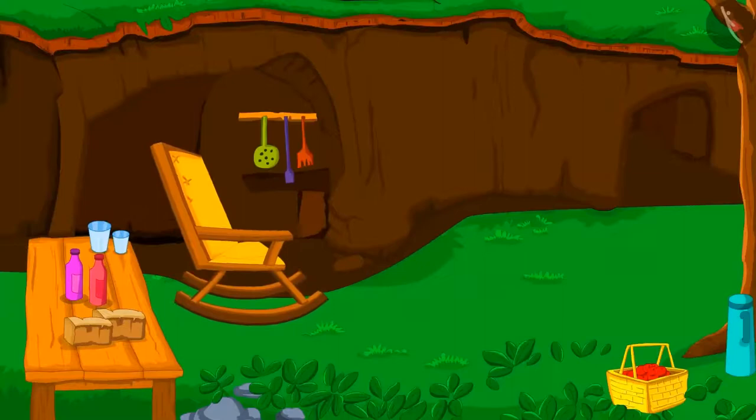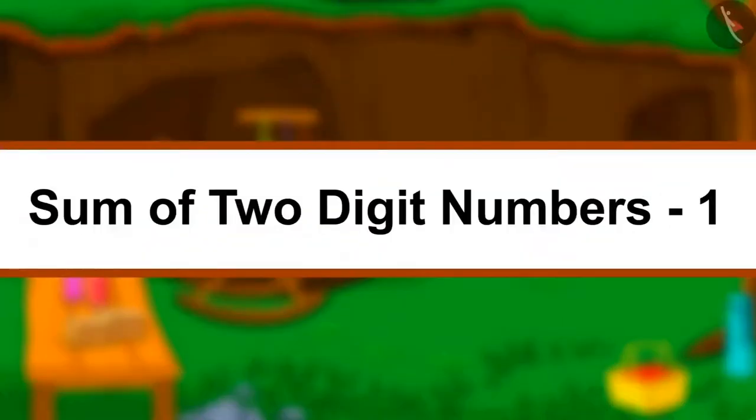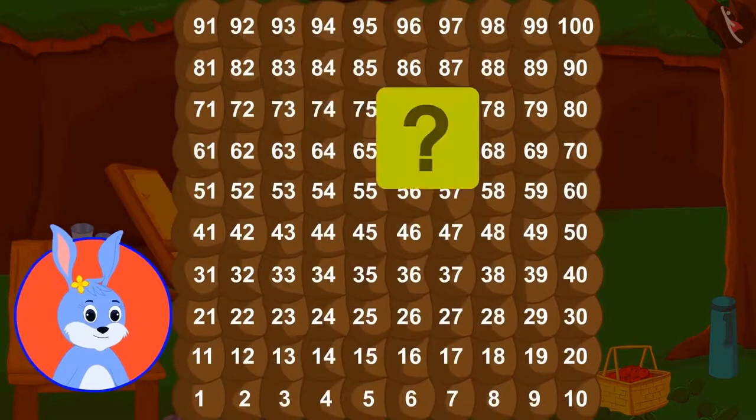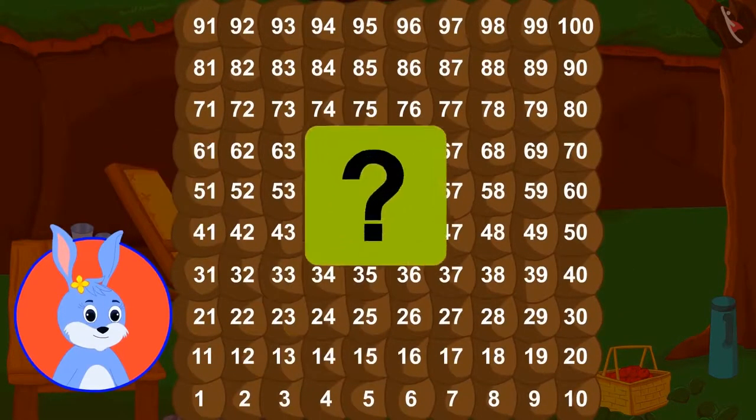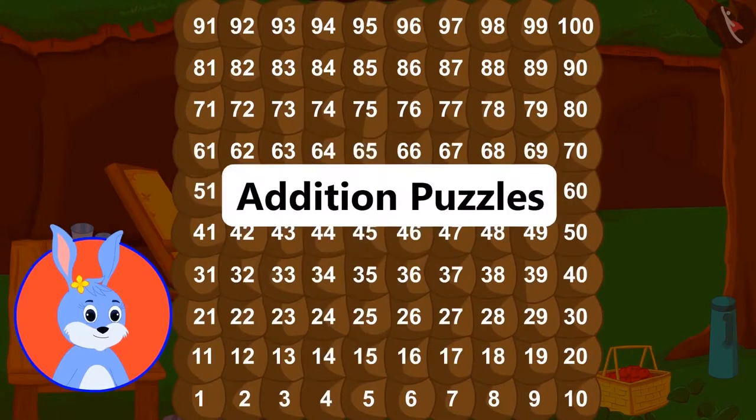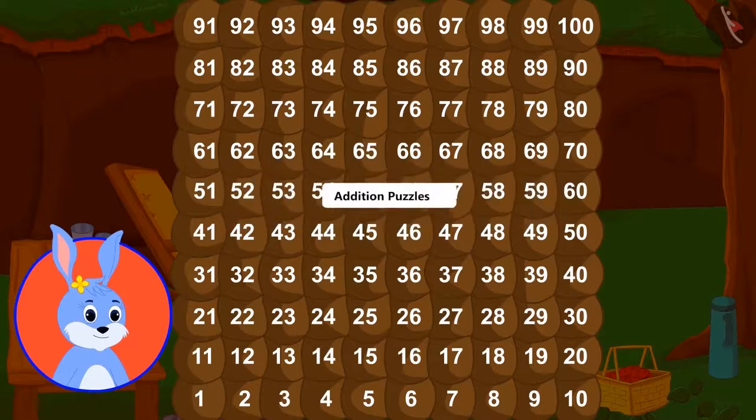Let us quickly learn to add and subtract the double-digit numbers while moving around Bunny's house. Bunny's mother has hidden something special in these rooms for Bunny. To find out what it is, we have to solve some addition puzzles. On solving the last puzzle, we will find the hidden objects. Let's get started.